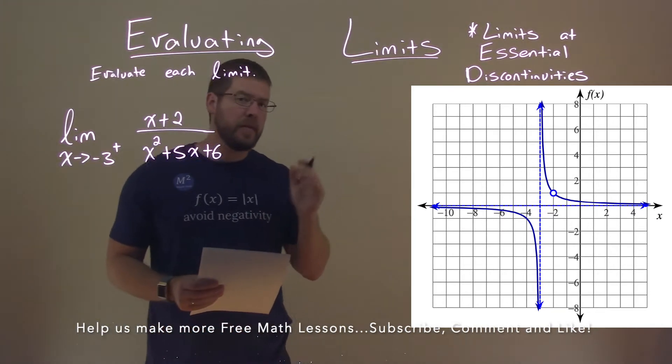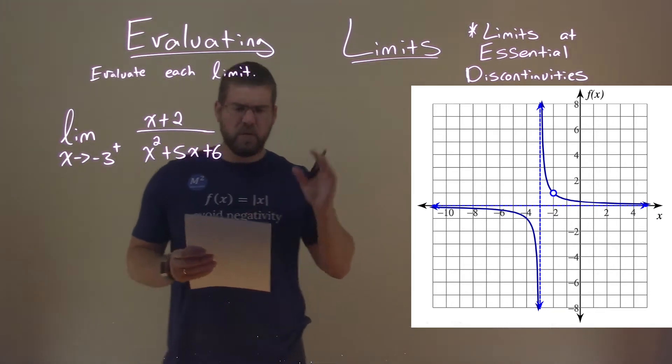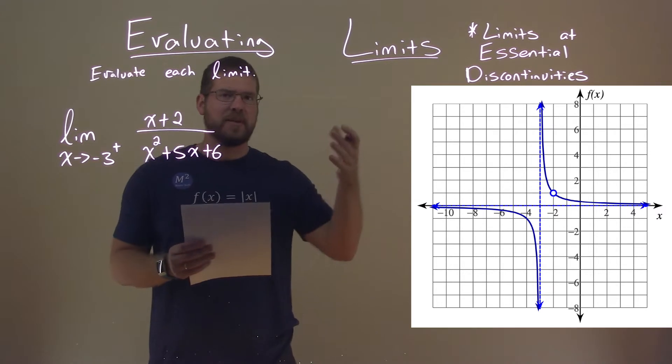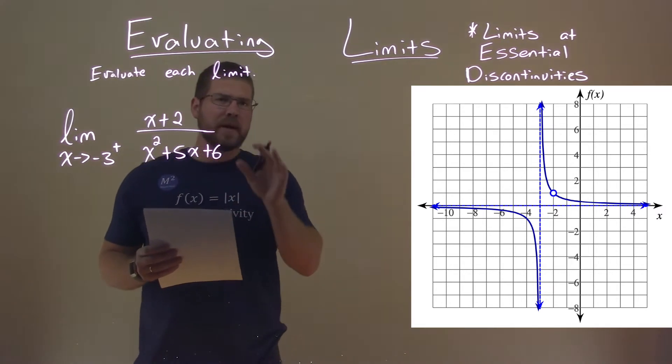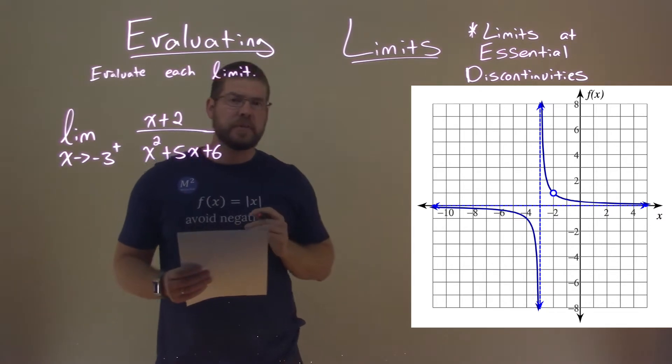And we're also given this graph. The graph makes it easier to visualize what happens as x approaches negative 3 from the right. But let's break it down algebraically and see how the two compare.